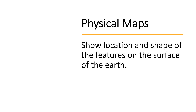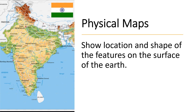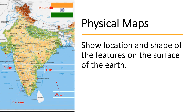What are physical maps? Physical maps show the location and shape of the features on the surface of the earth. These include mountains, water bodies, and even structures built by humans like canals, dams, bridges, parks, etc.